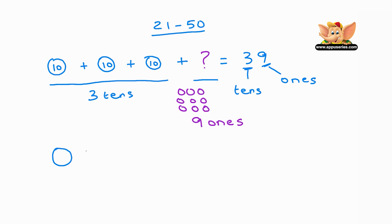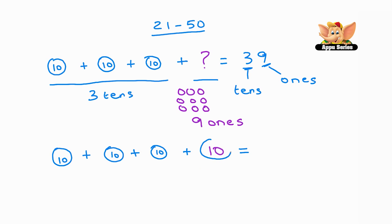What is three circles plus 10 equals? We know each circle equals a 10. So three circles plus one more circle, because 10 grapes also becomes a circle. That's three 10s plus one 10 — you have four 10s.